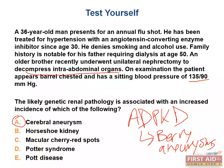The other answer choices are incorrect: horseshoe kidney would not explain the extra-renal findings; cherry red spots in the macula are associated with Niemann-Pick disease, a lysosomal storage disease; Potter syndrome involves renal agenesis and the patient would not survive to adulthood; and Pott's disease is a tuberculosis infection of the vertebra.